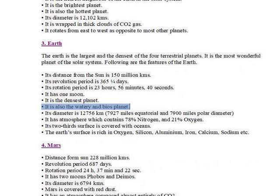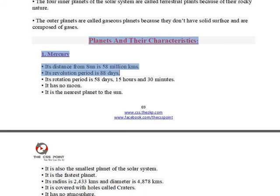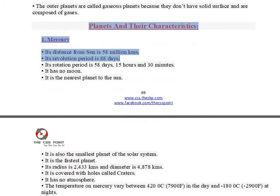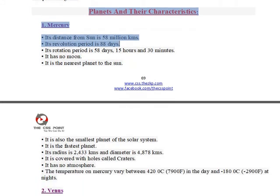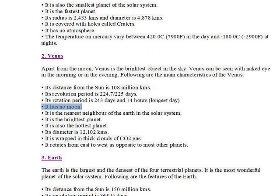Mercury is the densest one. Its distance from the sun is 58 million km, its revolution period is 88 days, its rotation period is 58 days 15 hours and 30 minutes, and it has no moon.